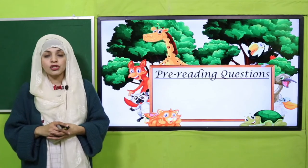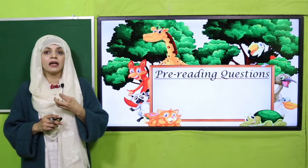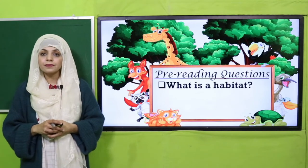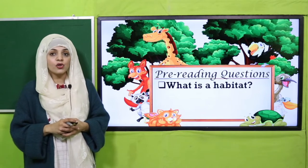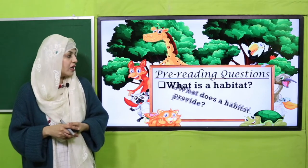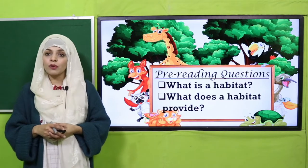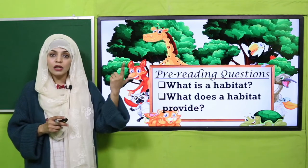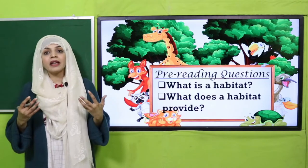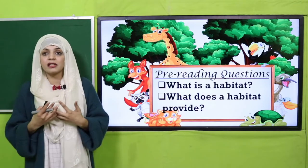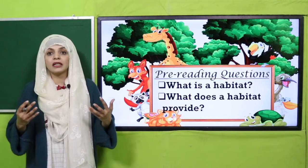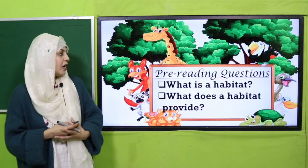Now is the time for pre-rating questions. As you are already well aware of habitat and ecosystem, quickly answer: what is a habitat? Very good - a natural living home of a plant or an animal is called a habitat. Now quickly tell me: what does a habitat provide? It provides food, water, air and shelter to its inhabitants - all these things the habitat provides.